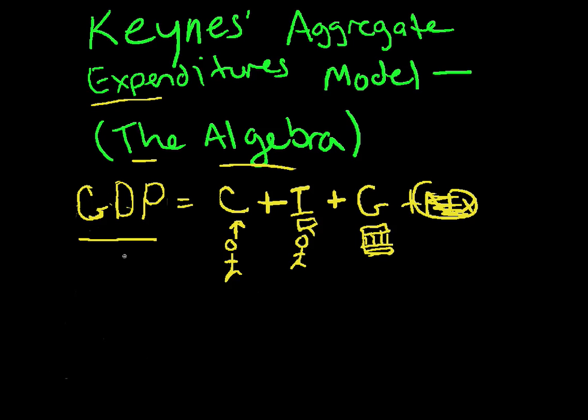Okay, welcome to the Keynesian Aggregate Expenditures Model Algebra Equation Number 2. What we're going to do is take each one of these components one at a time, transform them, and explain what's going on in this equation.